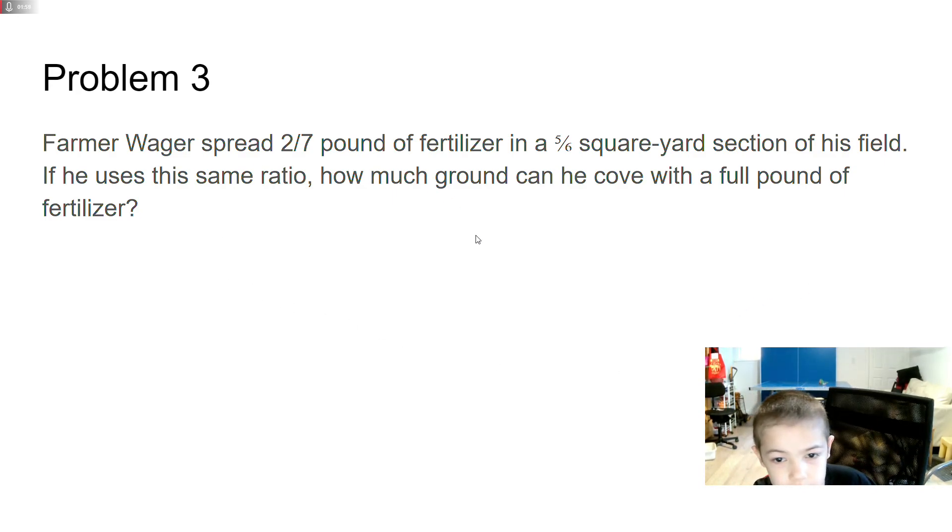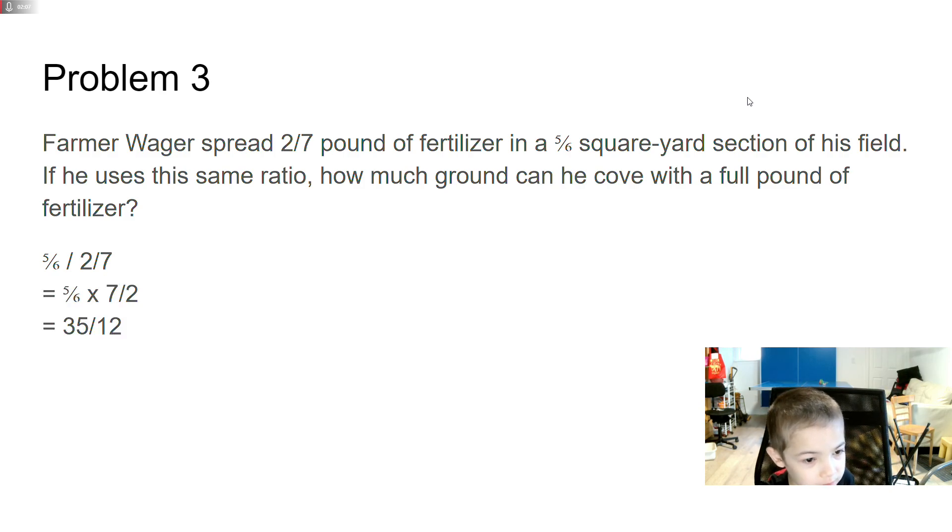So, this much pound of fertilizer covers this amount of yard. How much ground can we cover with a full pound? You want to do 5 over 6 divided by 2 over 7, times the reciprocal 7 over 2. And that's 5 over 6 times 7 over 2, which equals 35 over 12.